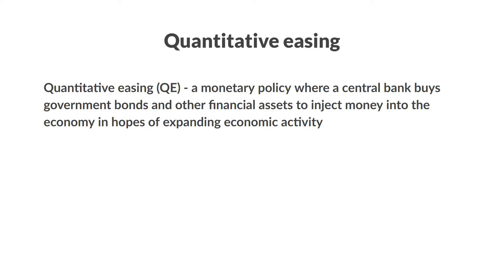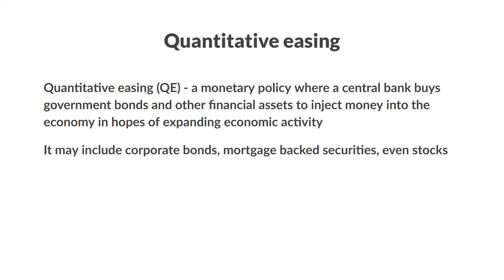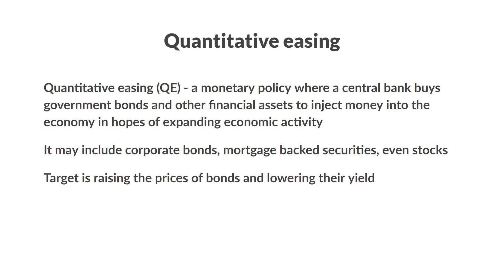Quantitative easing, often called QE, is a monetary policy where a central bank buys government bonds and other financial assets to inject money into the economy in hopes of expanding economic activity. When it comes to QE, next to government bonds and financial assets, it may include corporate bonds, mortgage-backed securities, and stocks. Buying financial assets from commercial banks and other financial institutions is the main target, as it increases the money supply while raising the prices of those financial assets and lowering their yield. This should in theory further incentivize lending and stimulate the economy even more.